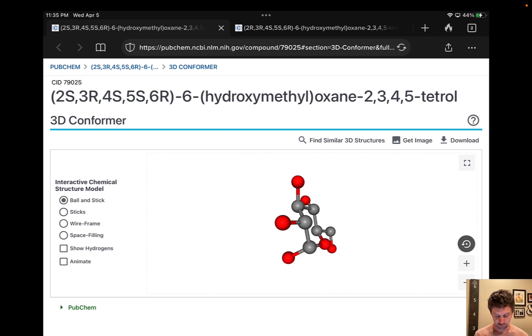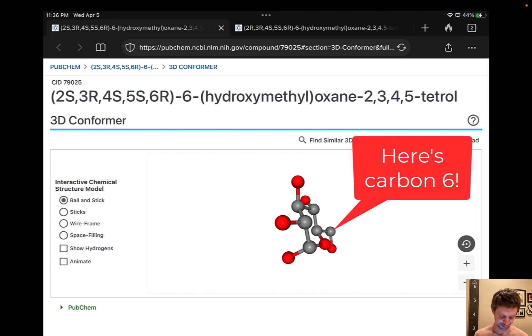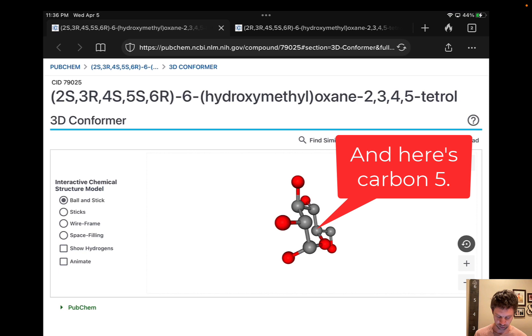To find out that this is a D sugar, we need to find the bottom-most stereocenter, which corresponds to carbon-5. It's that carbon right before the CH2OH carbon. So we've got this carbon that's in the bottom right here. The CH2OH carbon, that's carbon-6; carbon-5 is the one right next door.